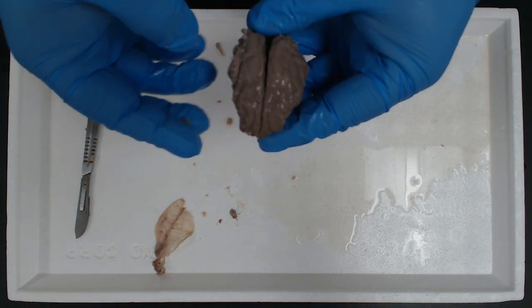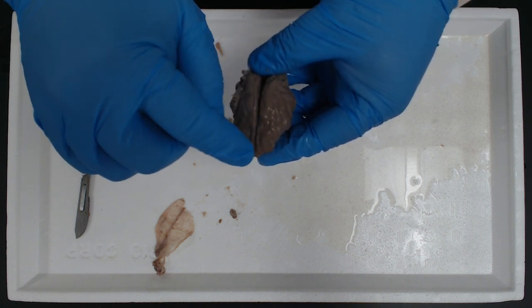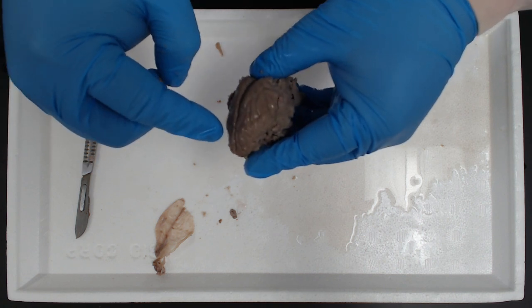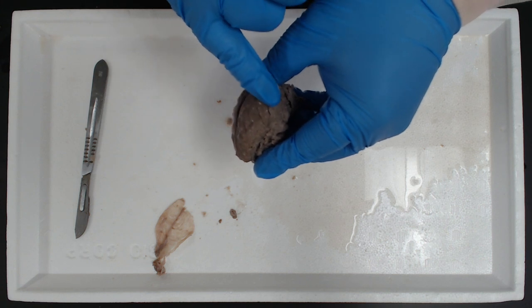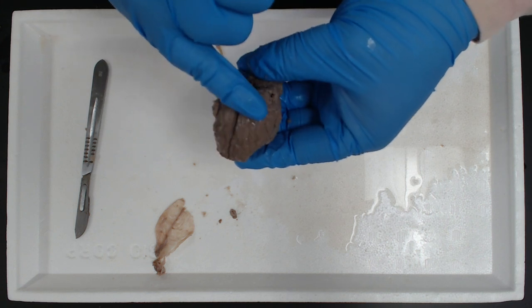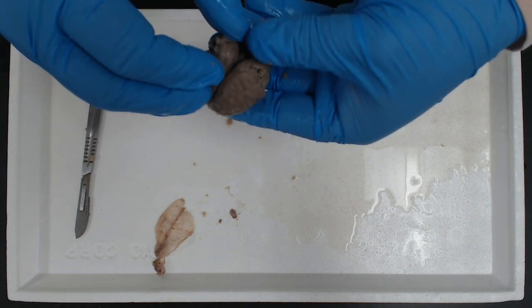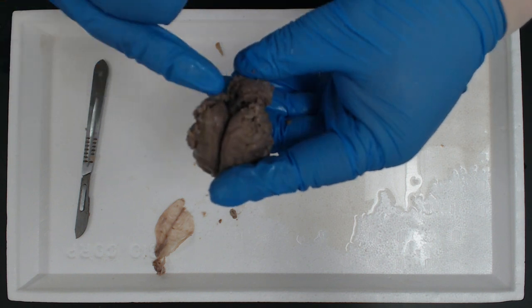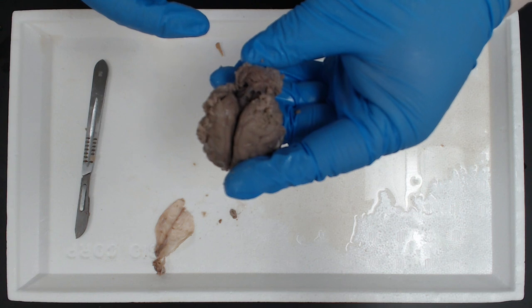Now, on the superior part of the brain, what we see is the longitudinal fissure, frontal lobe. Here would then be the temporal lobe. Most of this upper region is going to be the parietal. And then in the back, we'll have our occipital, along with this structure here, which is going to be your cerebellum.